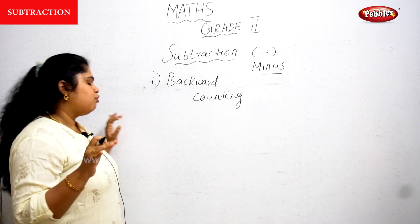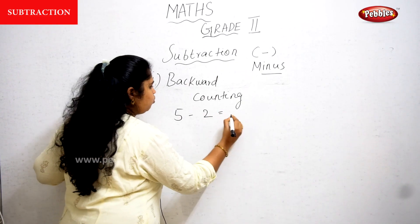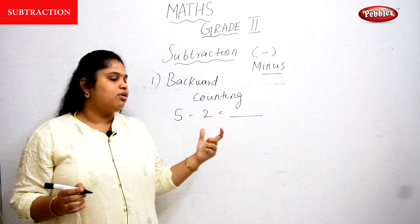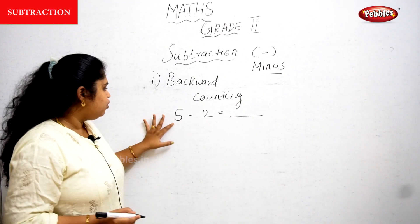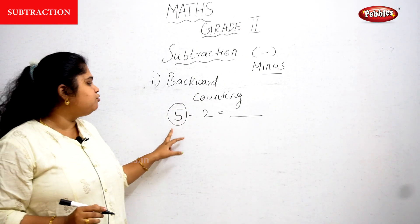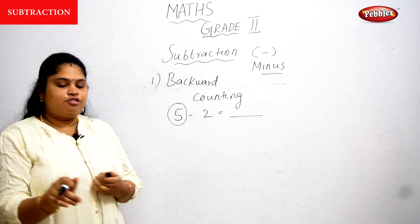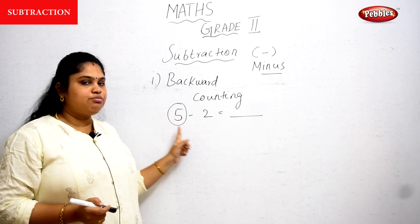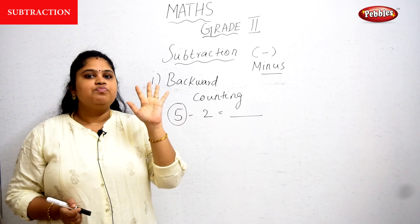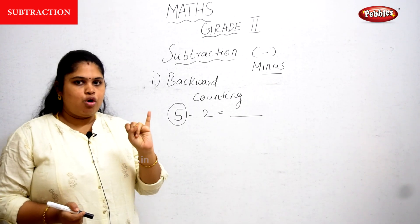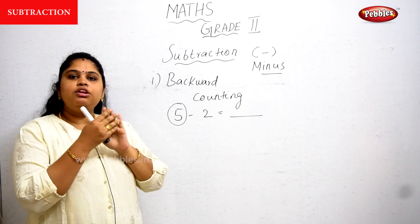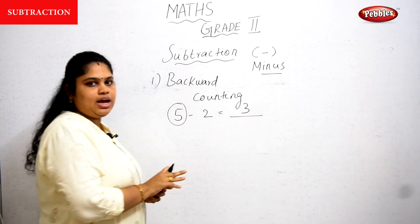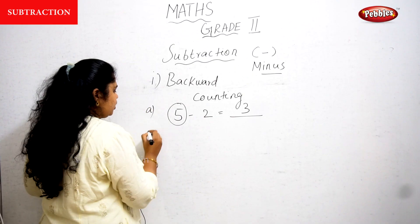For example: 5 minus 2 equals dash. We start backward counting from 5. From 5 going backward: 4, 3, 2. How many fingers did I count? Three fingers. So 5 minus 2 is equal to 3.